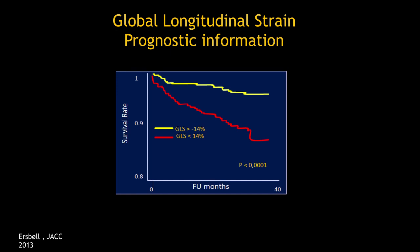Prognostic information is also available. Based on global longitudinal strain in a nicely performed prospective study, if speckle is normal — global longitudinal strain of 14 to 18 is the normal range — compared to people with decreased strain, the survival rate is demonstrably lower, confirming prognostic value.